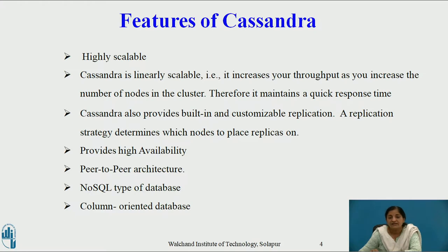Cassandra is linearly scalable. As Cassandra uses horizontal scaling, it increases the throughput of the system as the number of nodes increase in the cluster. Therefore, it maintains a very quick response time.